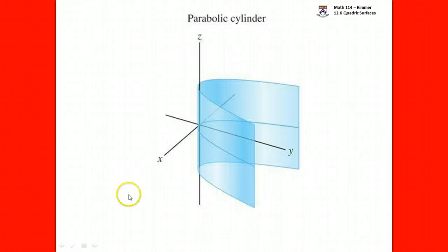Finally, we have a parabolic cylinder — just take a parabola and let z be anything you want. A normal parabola equation is y equals a times x squared, where a is a constant. It can open up or down based on the value of a. The vertex can be at the origin, though we can move it. The key point is: as soon as one variable is missing, you get a cylinder elongated in that direction.